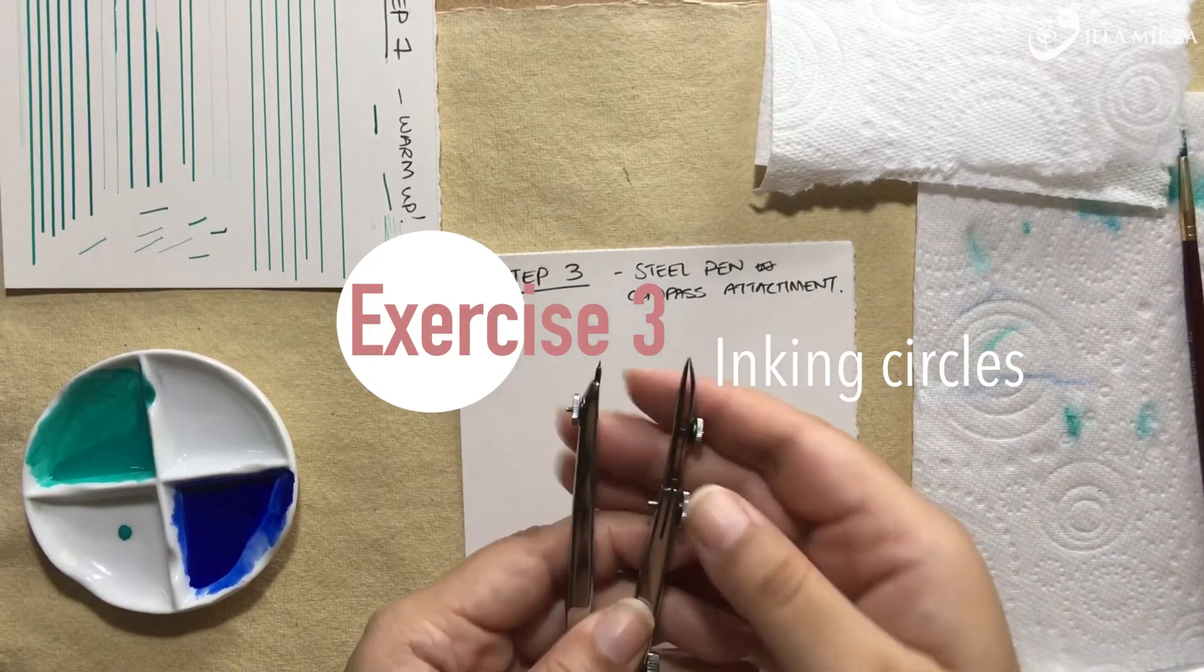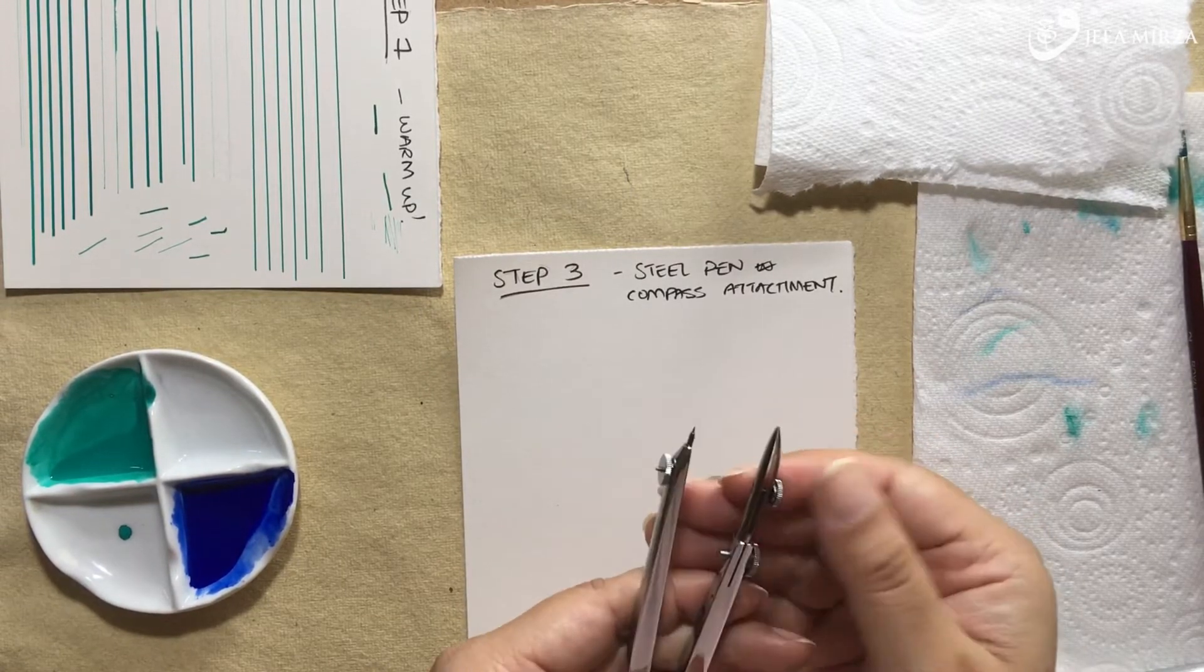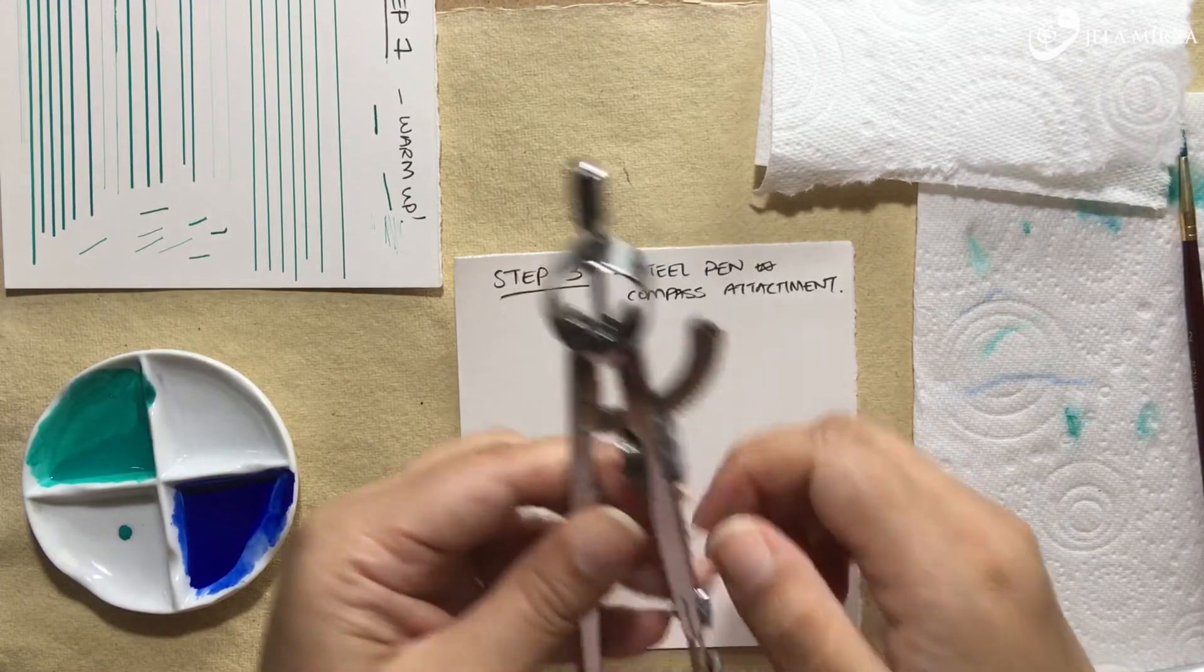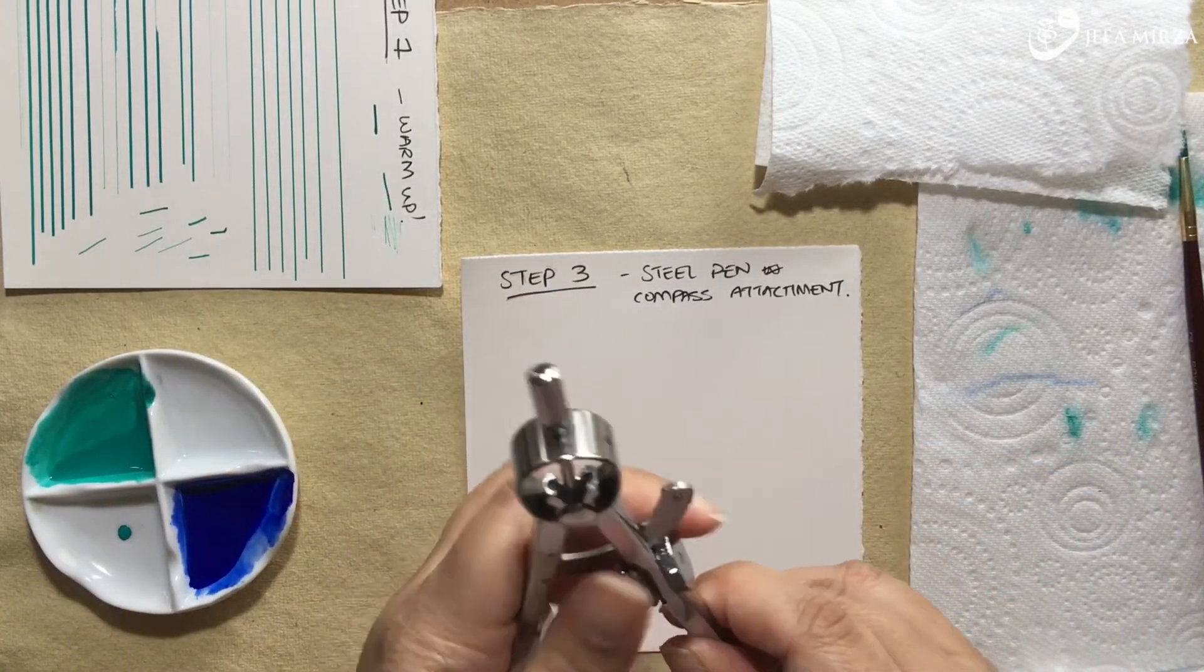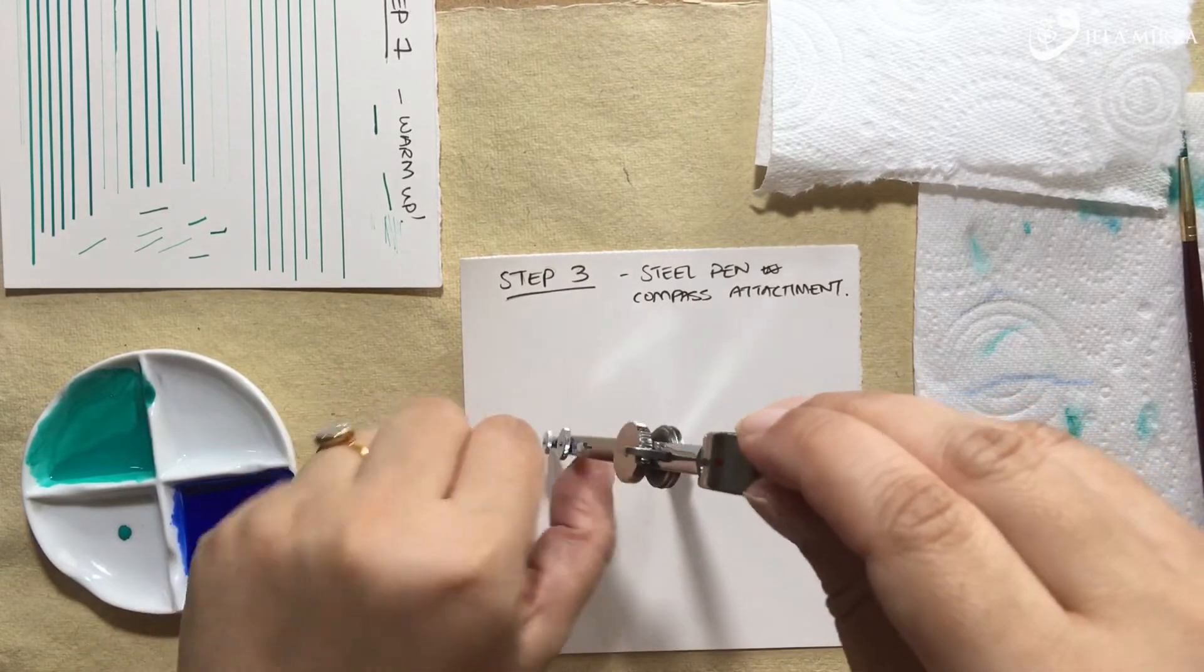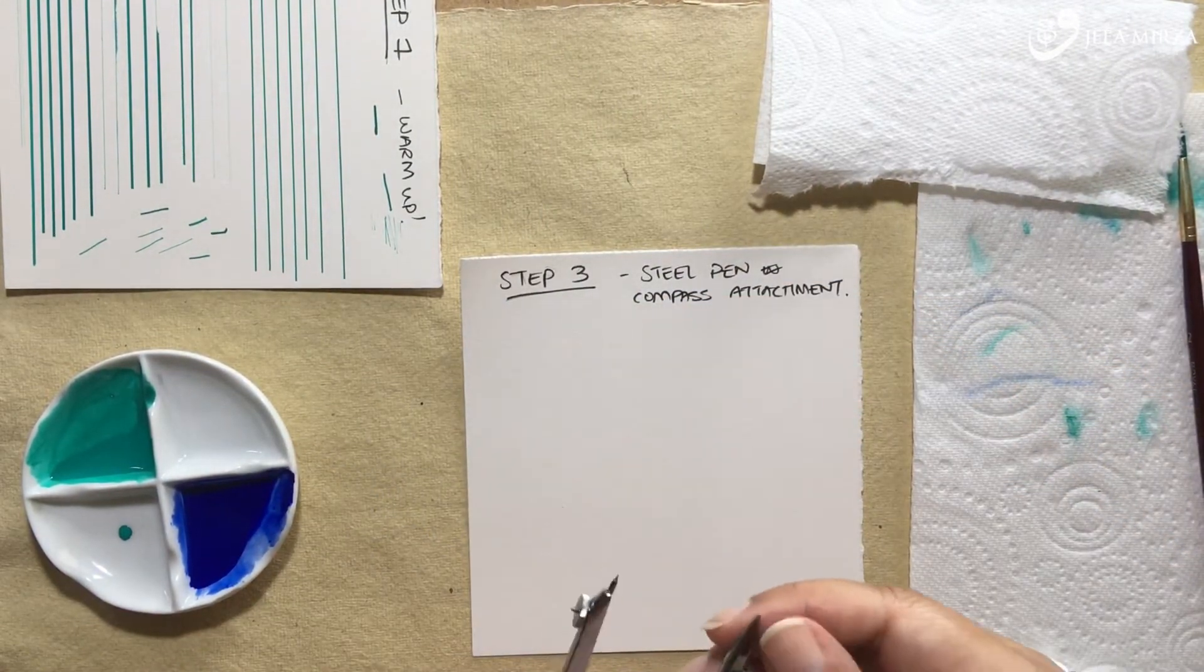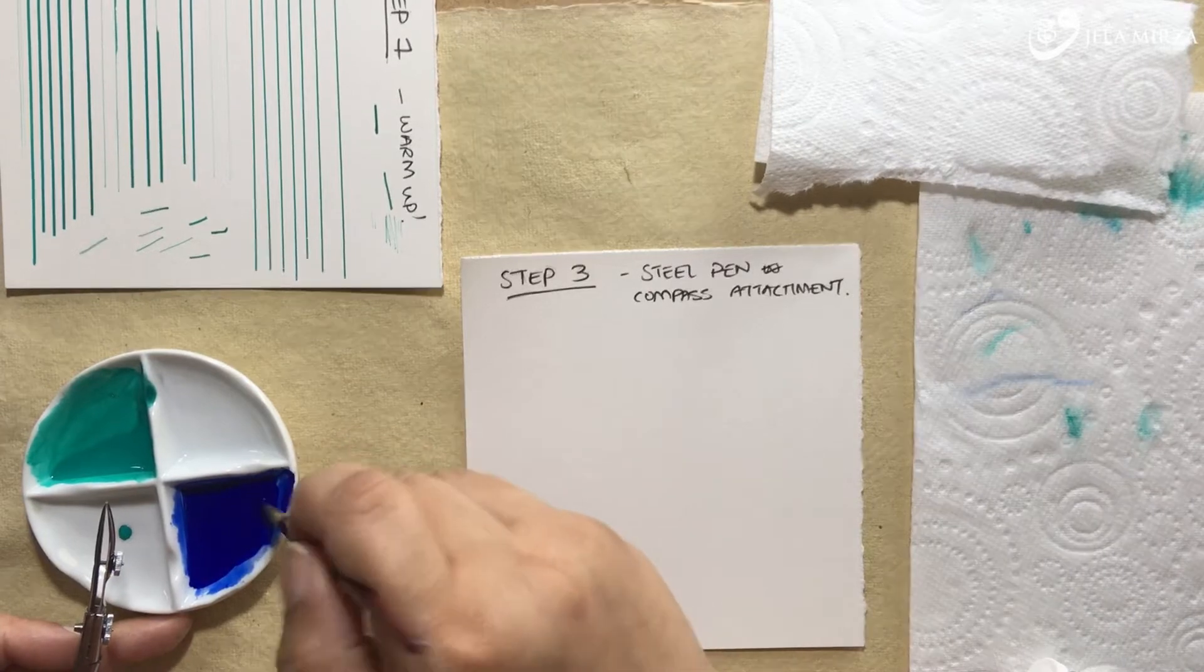So in this next exercise, I really want to show you very quickly how we can use the steel pen attachment in our compasses to ink in circles. It really opens up the scope of what we can do with our ruling pen. What I would recommend is you need to get your compass radius all set and positioned before you start to ink or add any sort of paint to the ruling pen attachment. You can see I'm also adjusting the knuckles that exist within the compass. And the reason for doing that is to make sure that when the compass is drawing its line or inking its line, that steel pen attachment remains vertical to the paper.